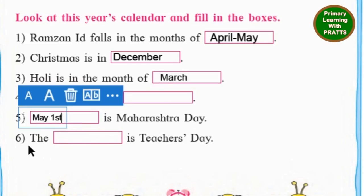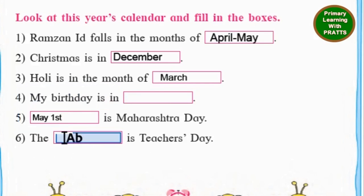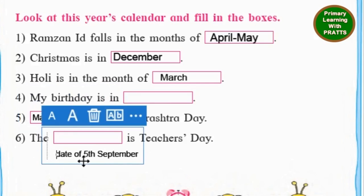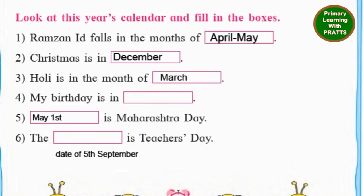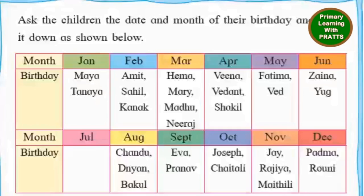The next one: the blank is Teacher's Day. The date of 5th September is Teacher's Day. They want us to write 5th September. Writing 'The 5th September is Teacher's Day' would be wrong grammar, so we will write 'The date of 5th September is Teacher's Day.'